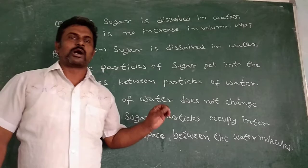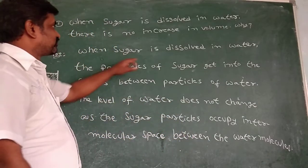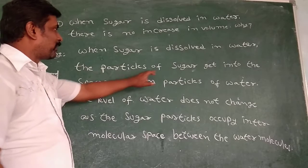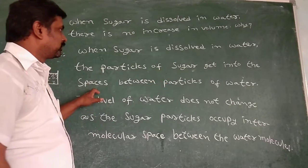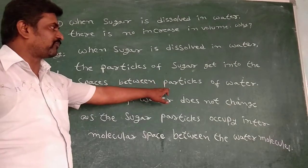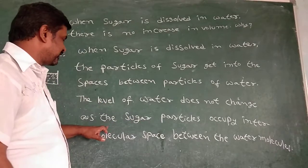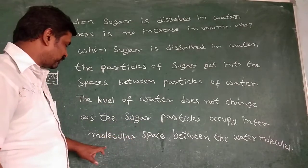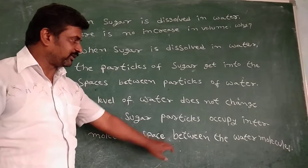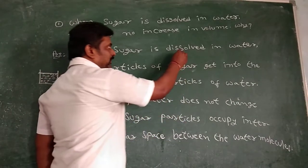So finally, the volume does not change. When sugar is dissolved in water, the particles of sugar get into the spaces between the particles of water. The level of water does not change, and the sugar particles occupy the intermolecular space between the water molecules.